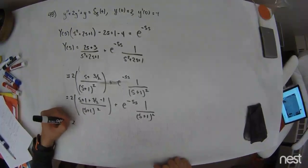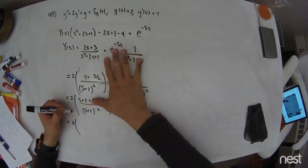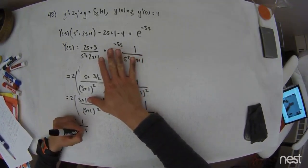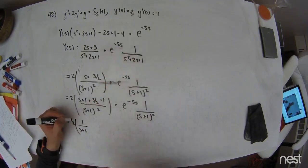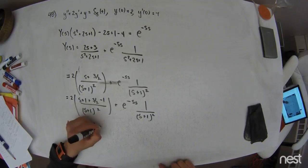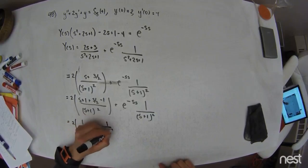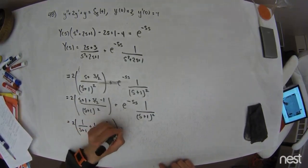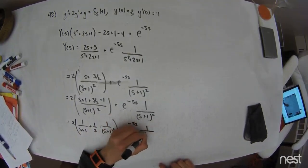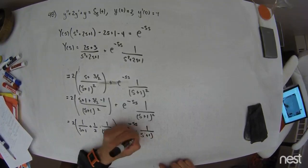So then I have a 2 times this much is an S plus 1. And it cancels with 1 over the S plus 1 here. And then 3 halves minus 1 is going to be a 1 half. And then this is multiplying 1 over S plus 1 quantity squared again. And I add this E to the negative 5S times 1 over S plus 1 quantity squared.